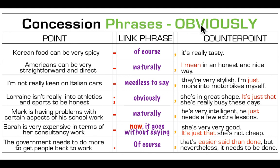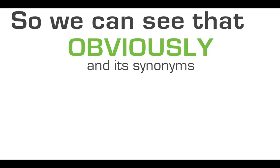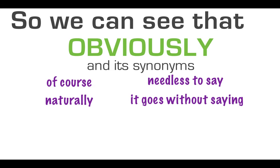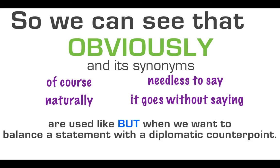It's interesting that students are often surprised that words like 'obviously,' 'of course,' 'naturally,' 'needless to say,' and 'it goes without saying' can mean 'but.' But there is a nuance: even though this is concession, these words are used when we want to balance a statement with a diplomatic counterpoint — quickly following up to show that you're not trying to be rude. So there you have another couple of members of the but family for concession, but with this immediate diplomatic follow-up.